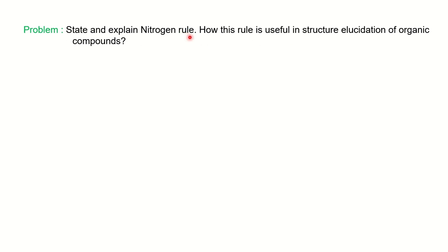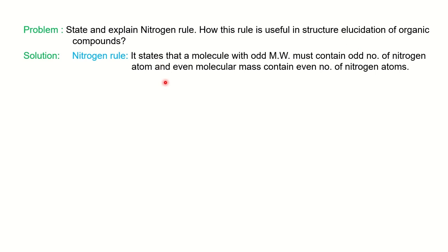So first, the nitrogen rule. It states that a molecule with odd molecular weight must contain an odd number of nitrogen atoms. If the molecular weight is even, then it will have an even number of nitrogen atoms. Very simple rule: if odd molecular weight, odd number of nitrogen atoms will be present; if even molecular weight, it will have even number of nitrogen atoms. This is applicable for molecules having nitrogen atoms.